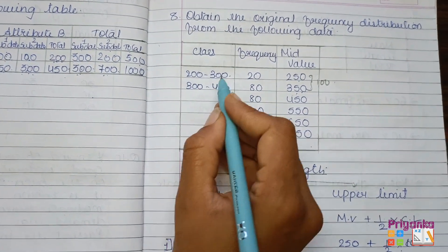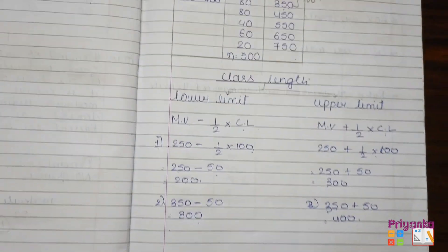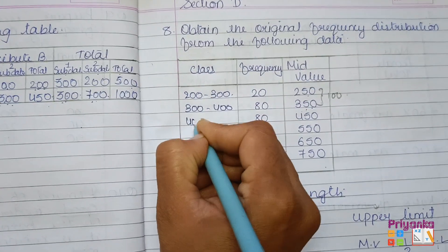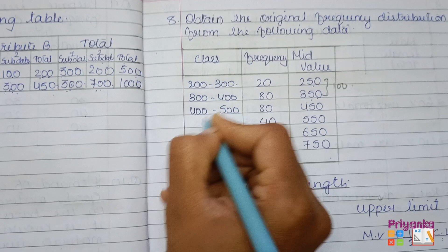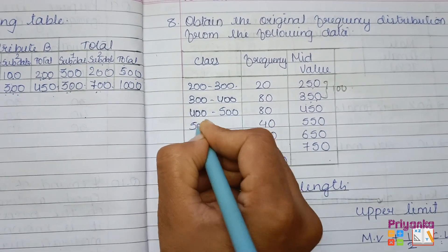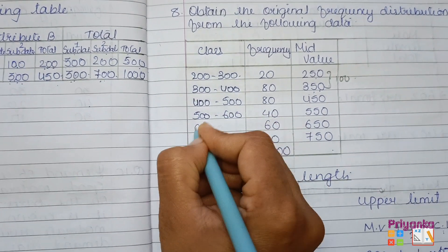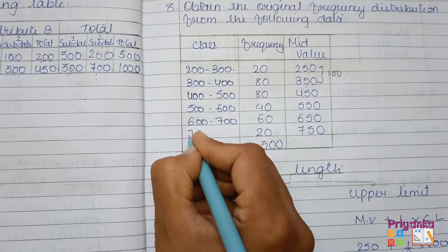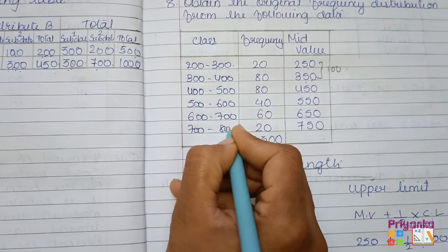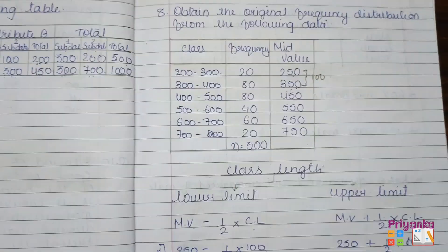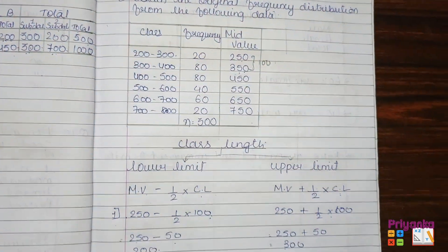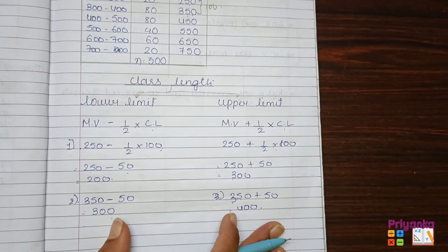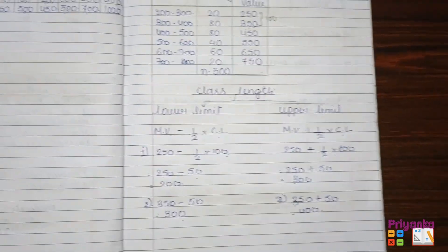By this pattern it is enough to understand that the remaining classes continue at intervals of 100: 400 to 500, 500 to 600, 600 to 700, and 700 to 800. This is how we find the original frequency distribution. This explanation is optional to write in your notebook.